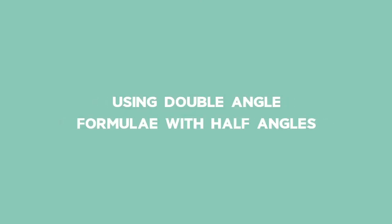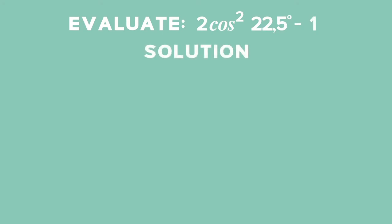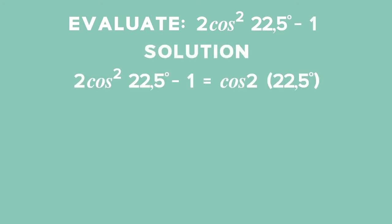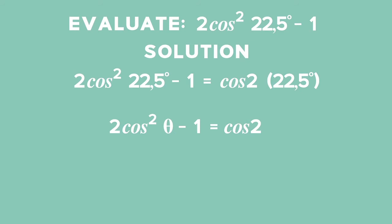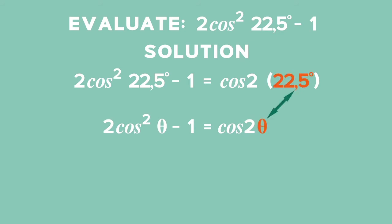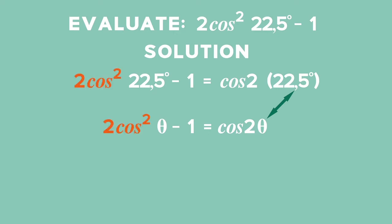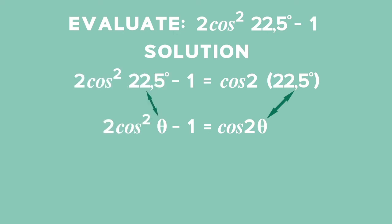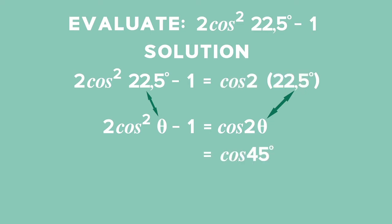Example 2: Using double angle formulae with half angles. Evaluate 2 cos² 22.5 degrees minus 1. Recognise that the given expression is in the form 2 cos² θ minus 1, which is the result of expanding cos 2θ where θ equals 22.5 degrees. Hence, we can write 2 cos² 22.5° minus 1 as cos(2 times 22.5 degrees). 22.5 degrees times 2 is 45 degrees, so we get cos 45 degrees, which equals √2/2 using special angles.